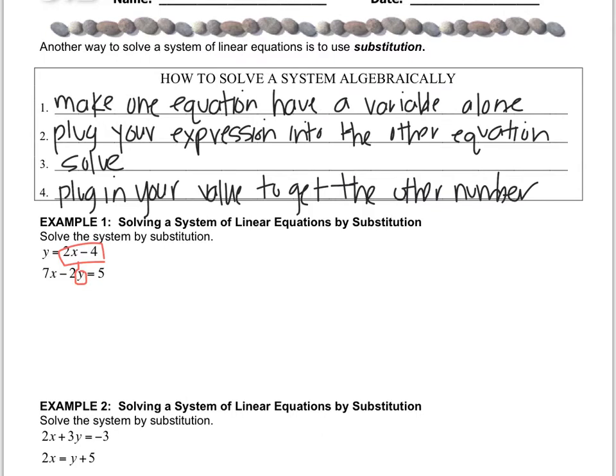So here's what I write down. I'm going to write down 7x minus 2, and then I'm going to do times 2x minus 4 instead of y. Don't write y, write 2x minus 4. Then just finish the equation equals 5.